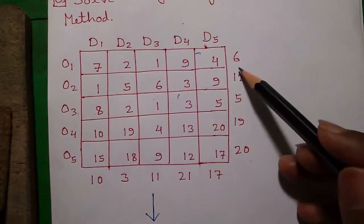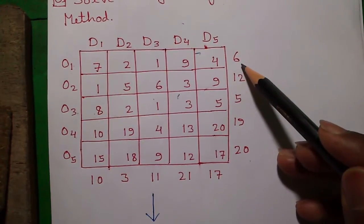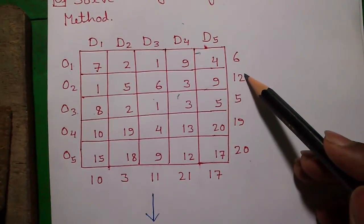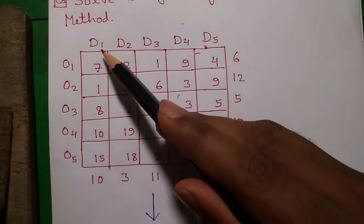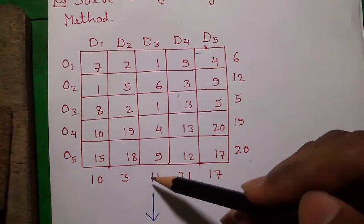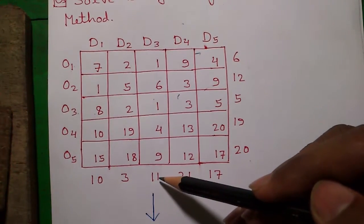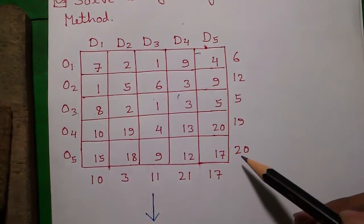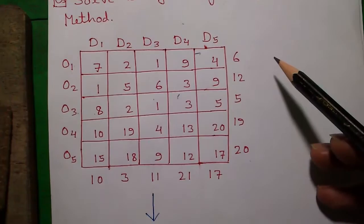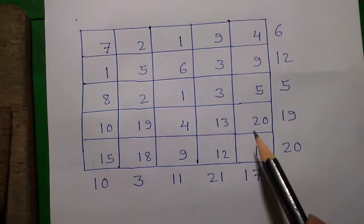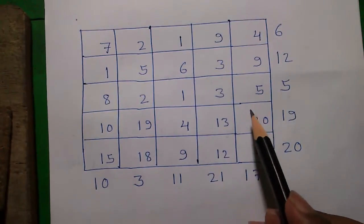In origin 1 we have a total supply of 6 units of goods. In origin 2 the total supply is 12 units of goods. In destination 1 the total demand is 10 units of goods, and in destination 3 the total demand is 11 units. So we have to fulfill all the demands using all the supplies with minimum transportation cost. Let's solve it using matrix minimum method — as the name suggests, we look for the minimum value among all the cost values in the matrix.